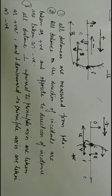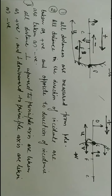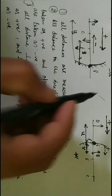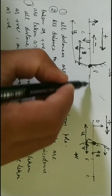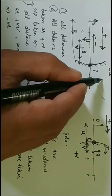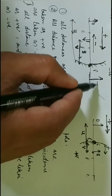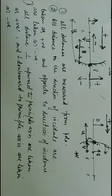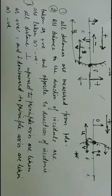The third rule is: all distances measured perpendicularly upward to the principal axis are taken as positive, and distances measured perpendicularly downward are taken as negative.